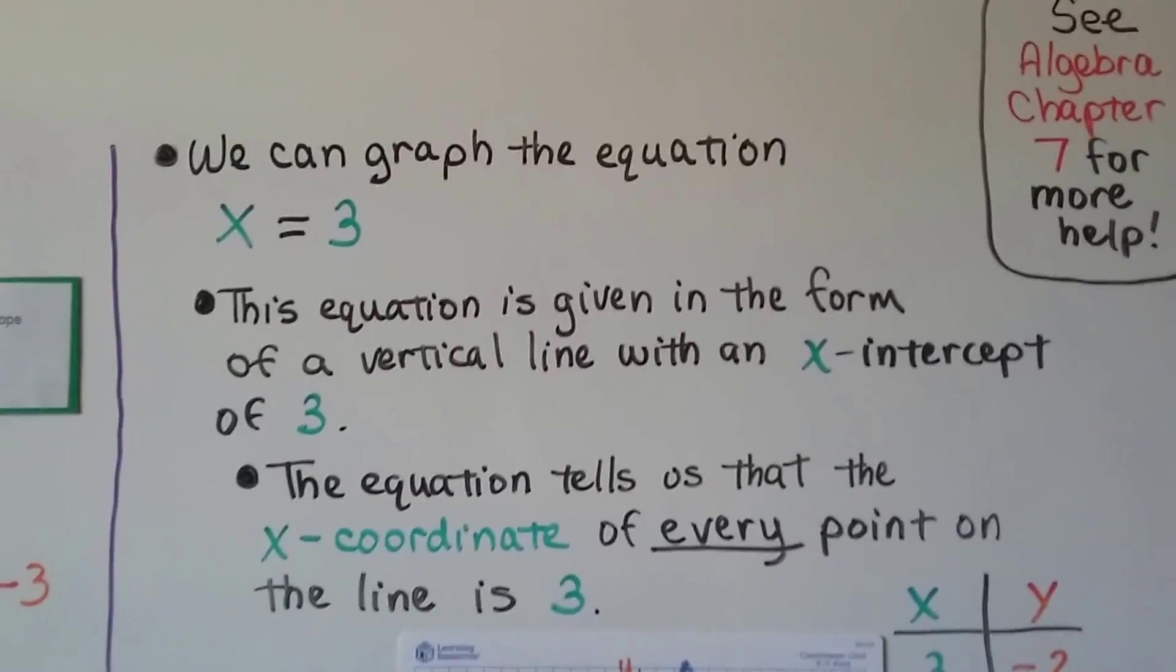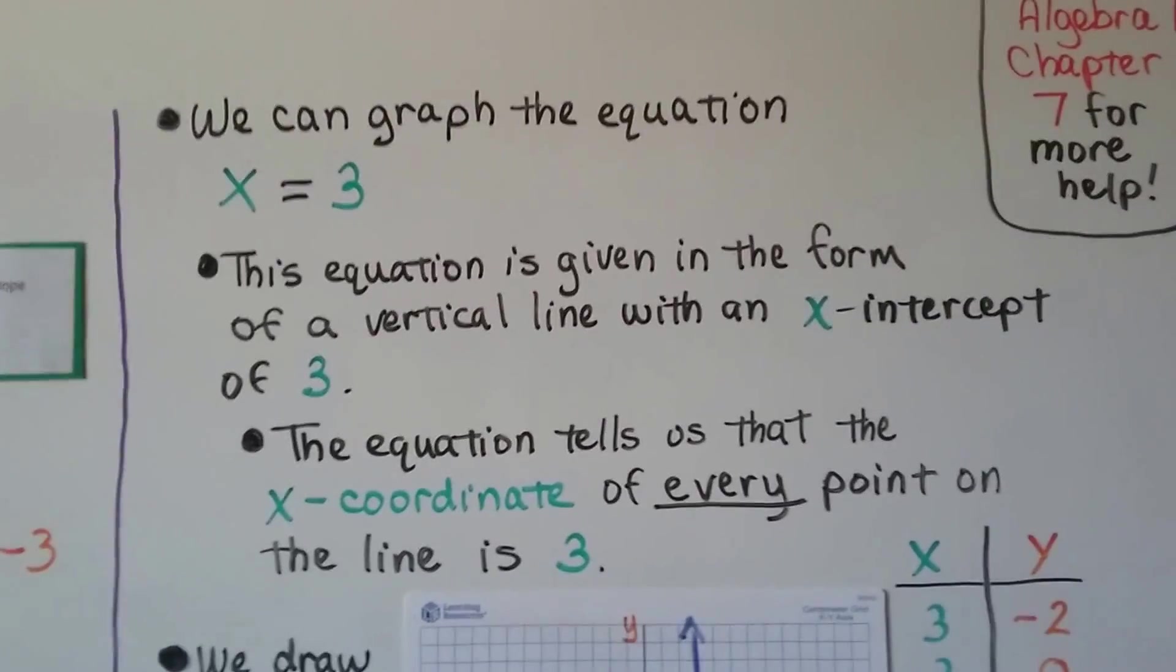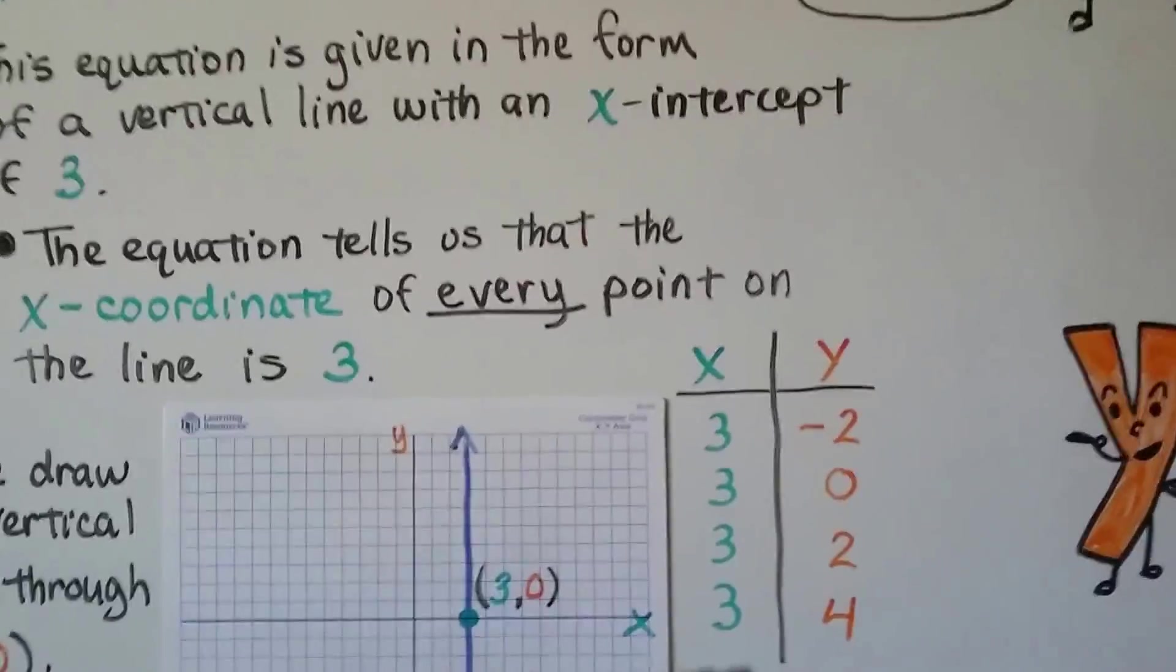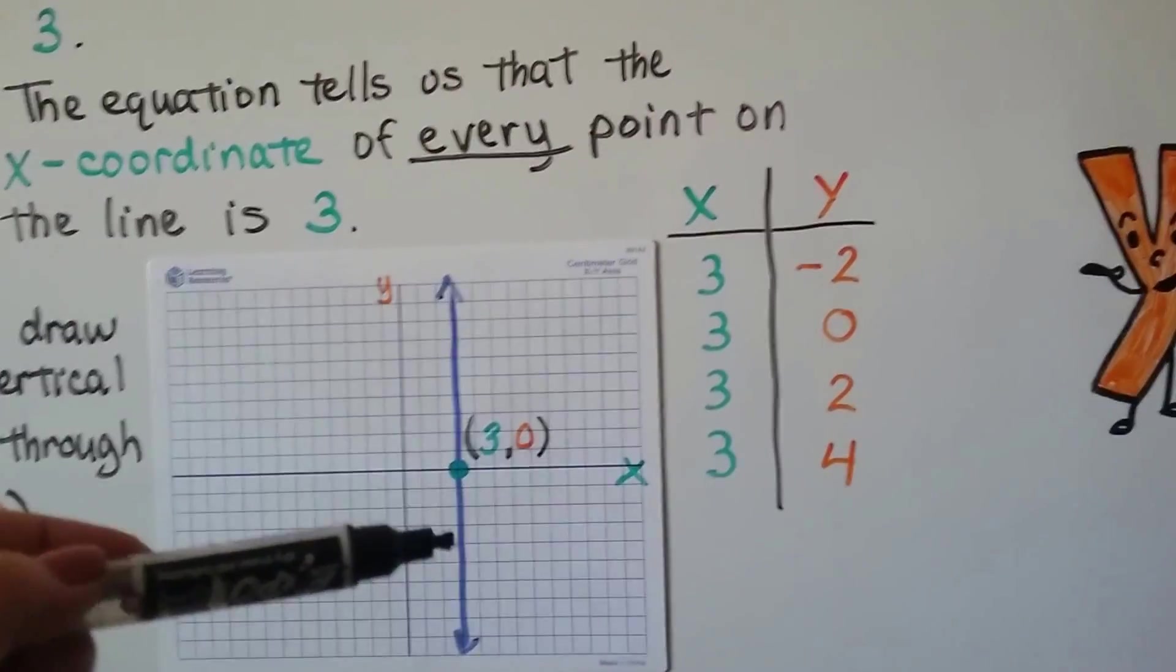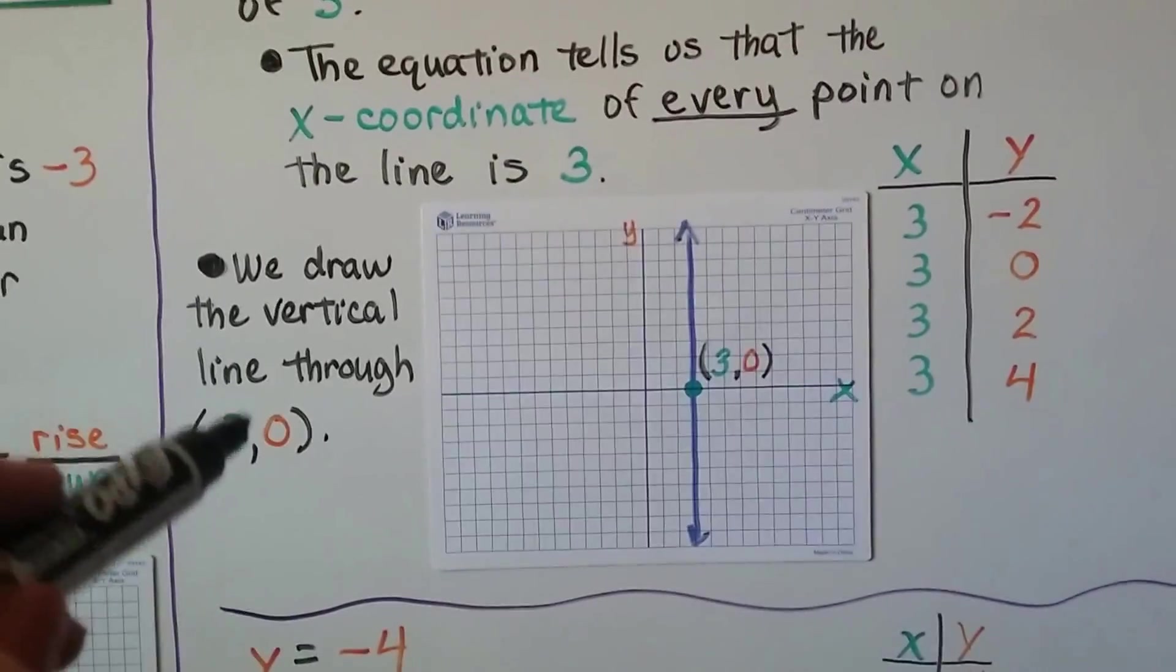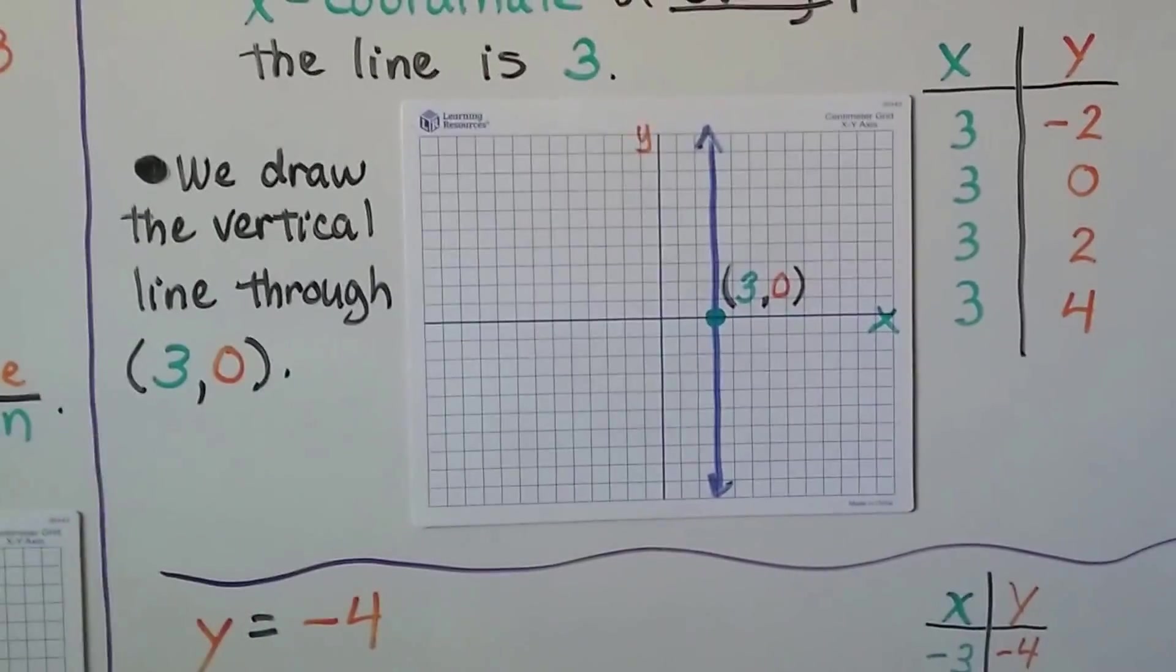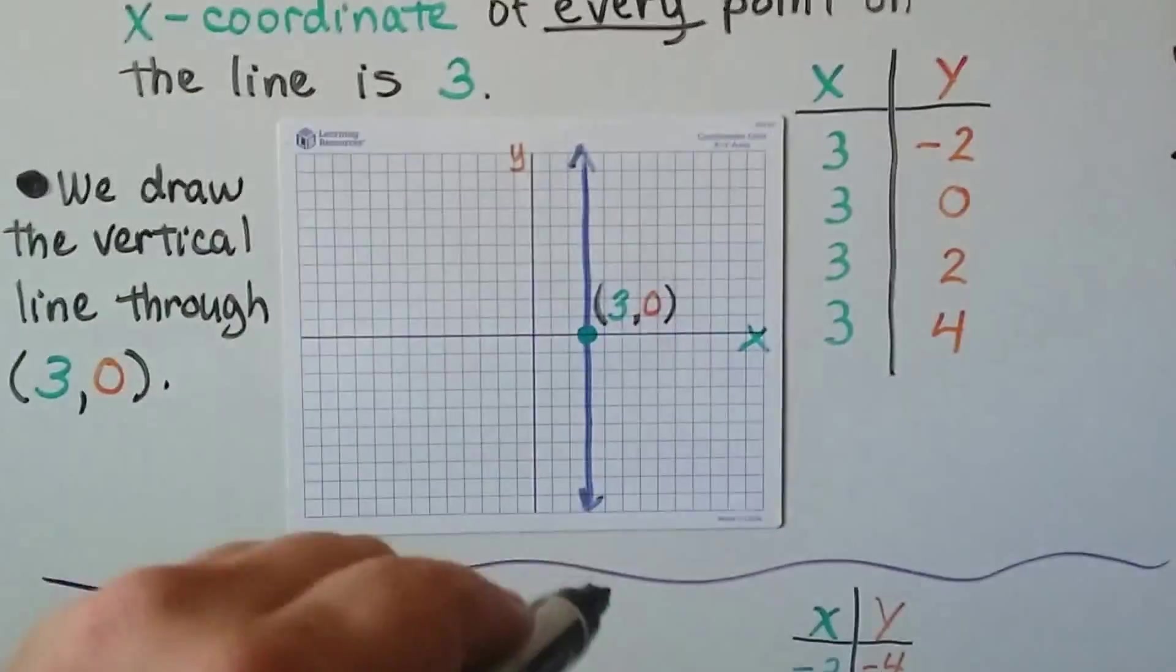We can graph the equation x = 3. The equation is given in the form of a vertical line with an x-intercept of 3. The equation tells us that the x-coordinate of every point on the line is a 3. If we made a table of values for our ordered pairs, every single x value would be a 3 as the y would change. We draw the vertical line through 3 for x and 0 for y and just make it go straight up like that. When you just see x = 3, you know it's a vertical line going through 3 for x.